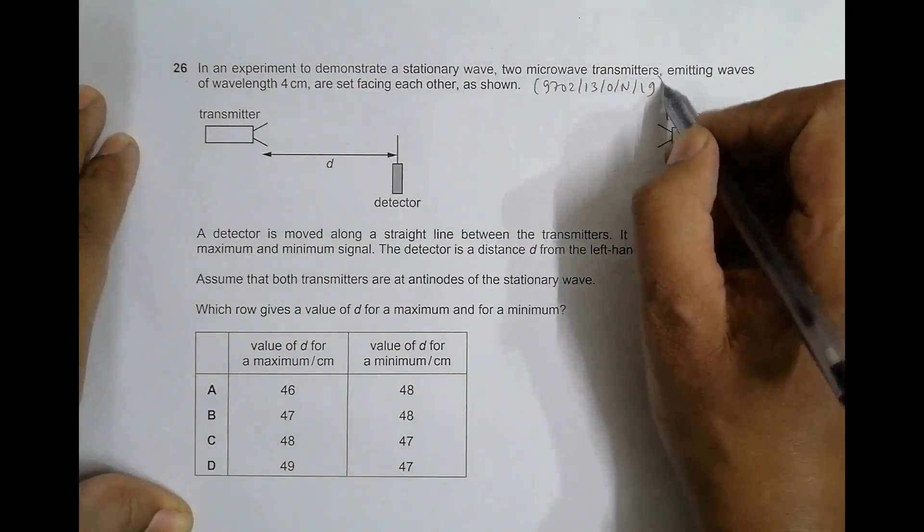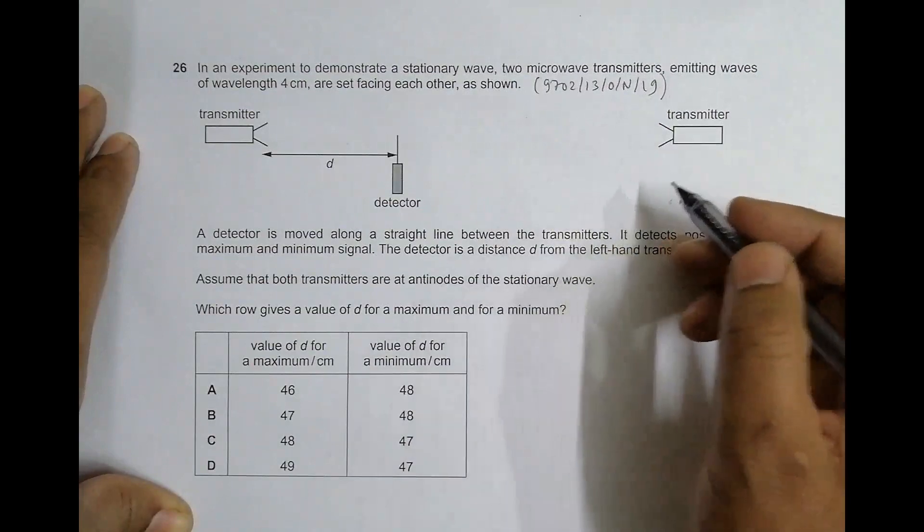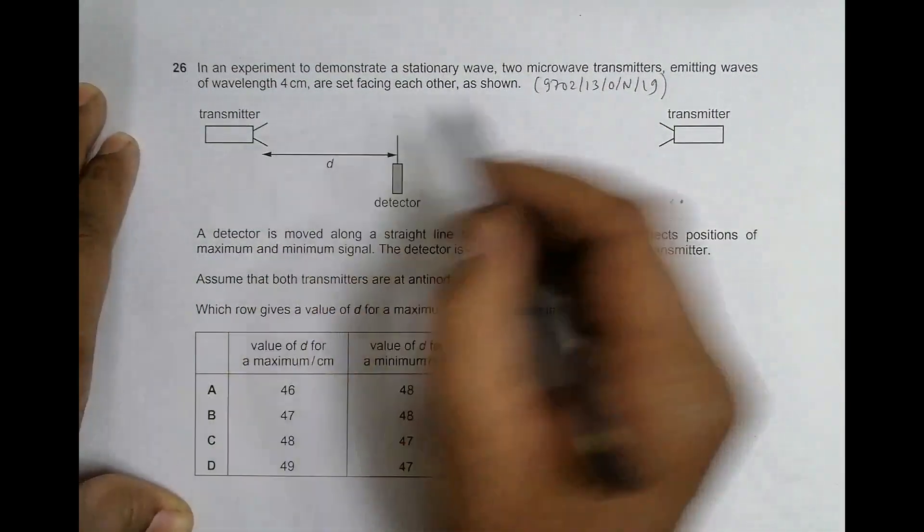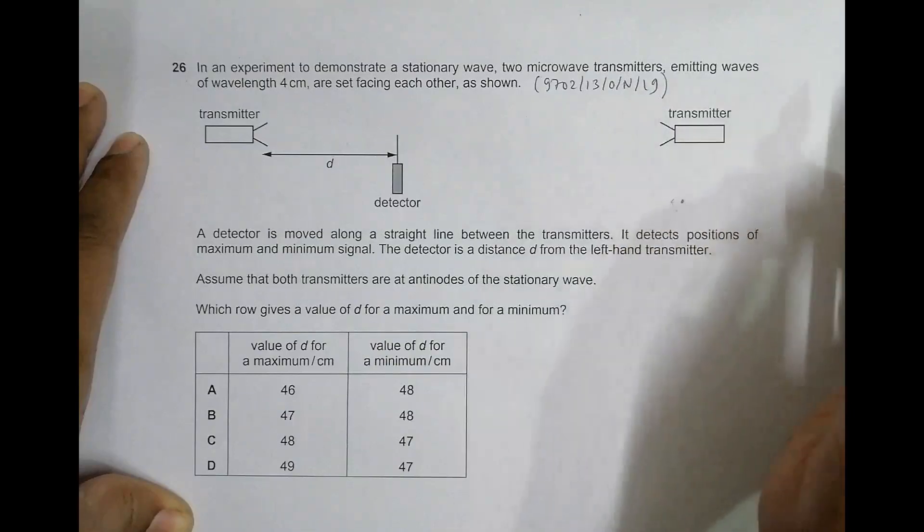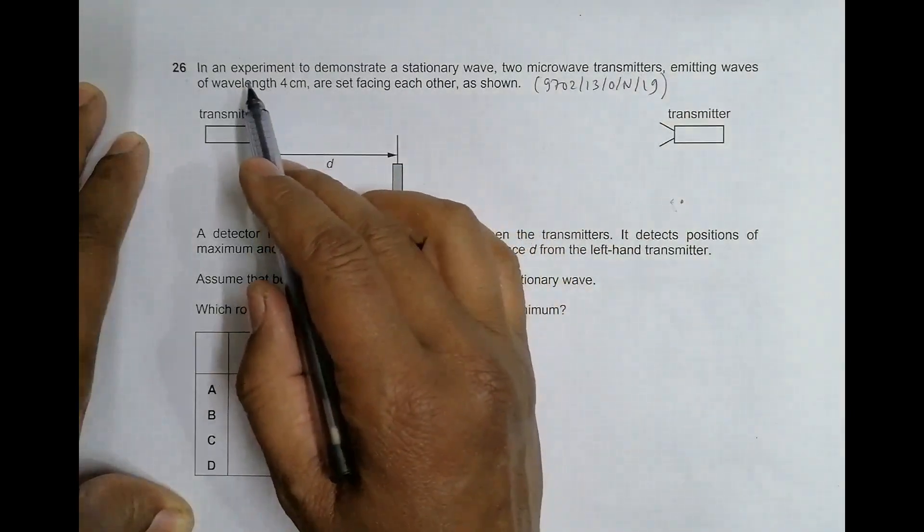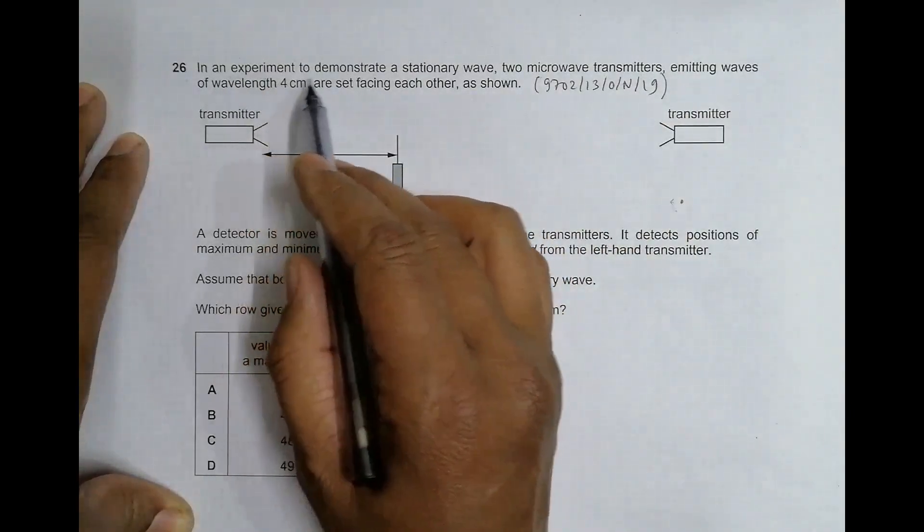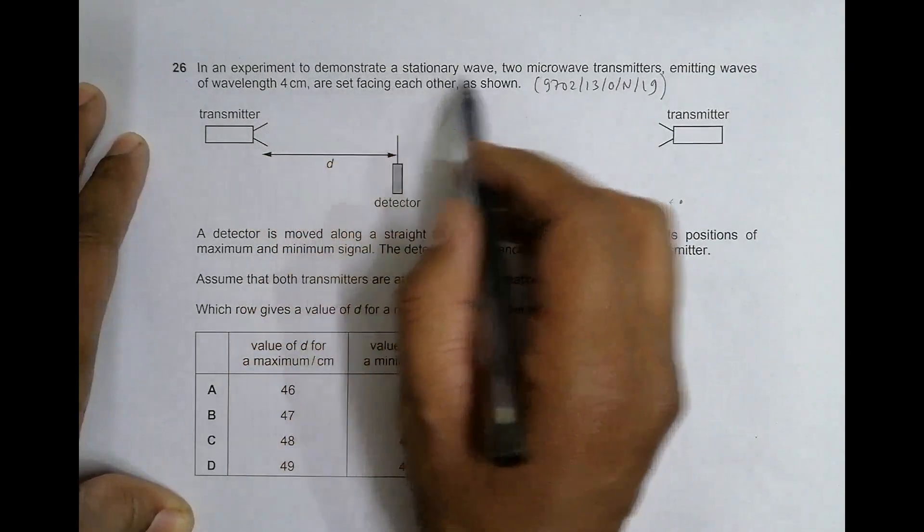Hello folks, this is 2019 October November paper 1-3, question number 26. It is concerned with the chapter of superposition of waves. It says in an experiment to demonstrate a stationary wave, two microwave transmitters emitting waves of wavelength 4 centimeters are used.